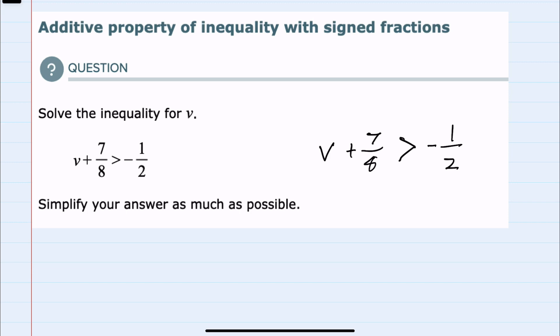Since v currently has a plus 7 eighths, I would like to isolate the v by subtracting 7 eighths.